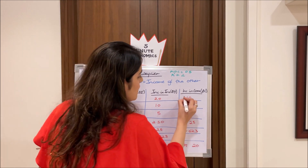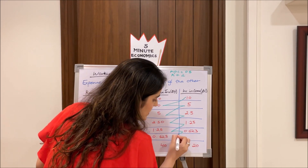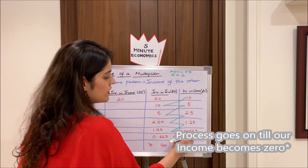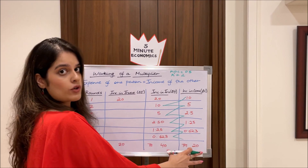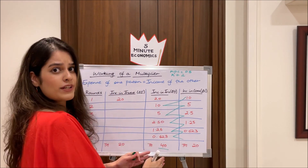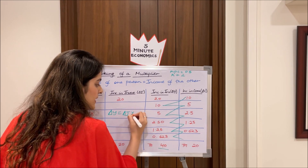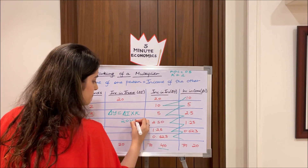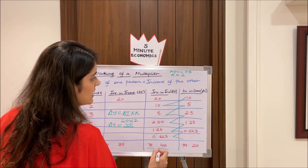This pattern continues: income goes from 10 to 5 to 2.5 and so on, until ΔC approaches 0. When we add up all the increases in income — 20, 10, 5, 2.5, and so on — the total comes to 40 crores. We can also verify this using the formula: ΔY = ΔI × k = 20 × 2 = 40. So the total increase in income is 40 crores.